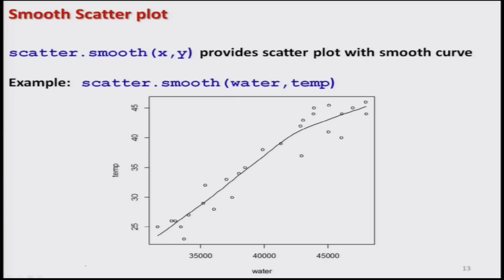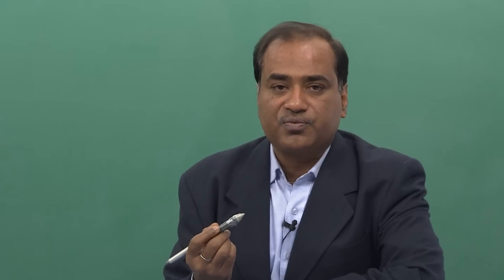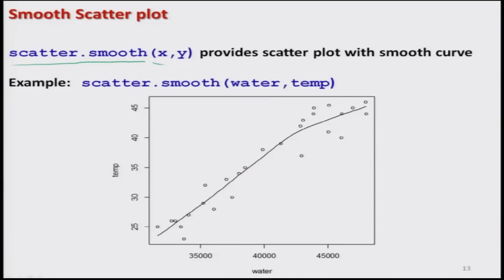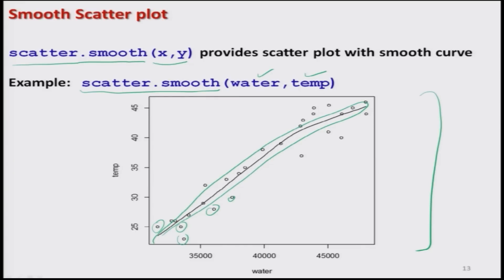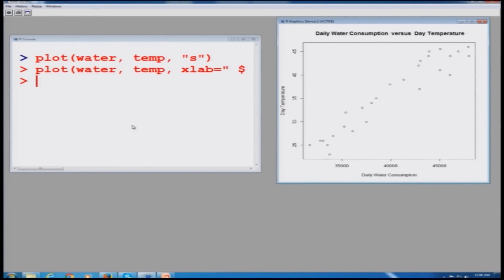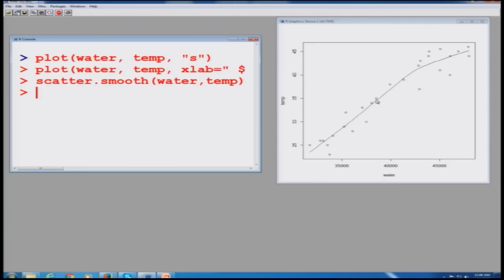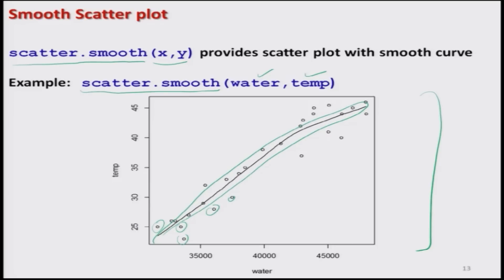Another option that creates a smooth curve is `scatter.smooth()`. This means a scatter diagram is created and the points are joined by a smooth line. Using `scatter.smooth(water, temp)` gives a plot where all the data points are present but also has a smooth line passing through or close to those points.